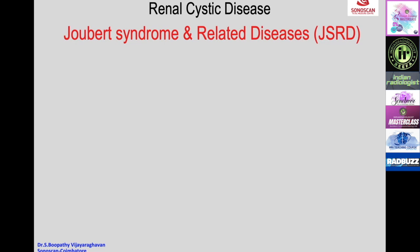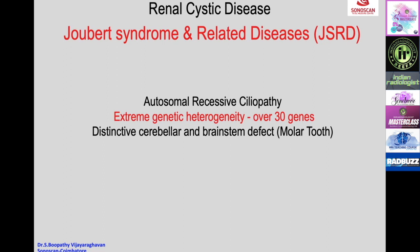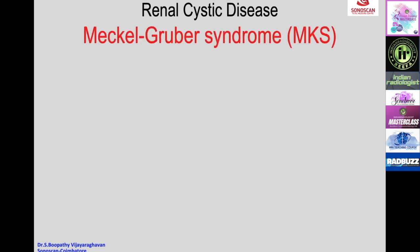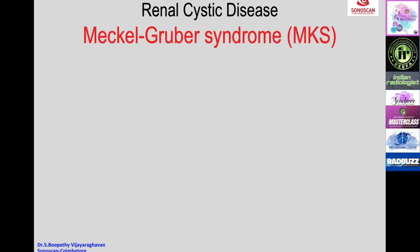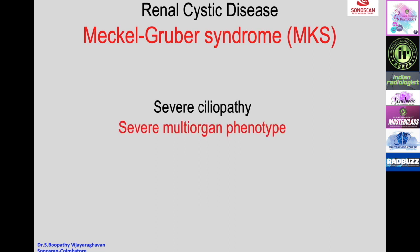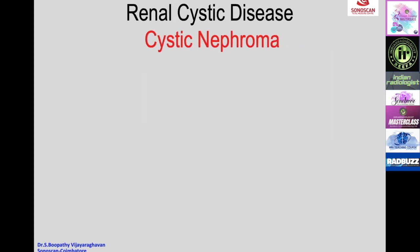Joubert syndrome and related diseases is an autosomal recessive ciliopathy with extreme genetic heterogeneity involving over 30 genes. A distinctive cerebellar and brain stem defect called the molar tooth sign is present, along with cystic kidney disease, congenital hepatic fibrosis, and skeletal features such as polydactyly. Genetic diagnosis is necessary. Meckel-Gruber syndrome is a severe ciliopathy with severe multi-organ phenotype involvement resulting in embryonic or early neonatal mortality; it is not seen in postnatal life.